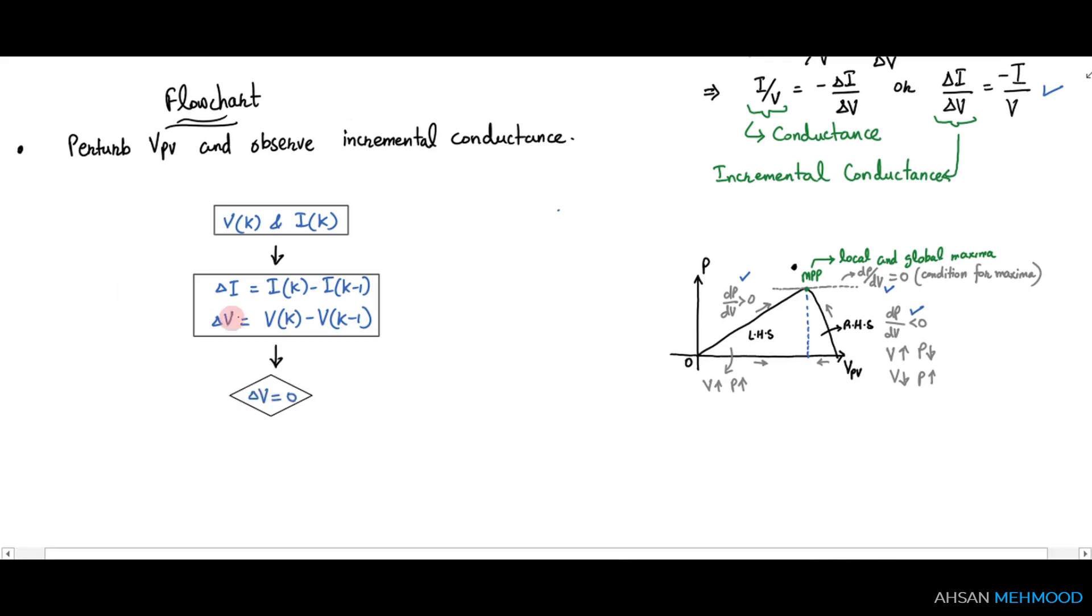First we will check the value of delta v. If it is equal to zero, then we cannot find incremental conductance, delta i by delta v, because it will make the ratio infinity. But if it is not equal to zero, then we can find delta i by delta v.